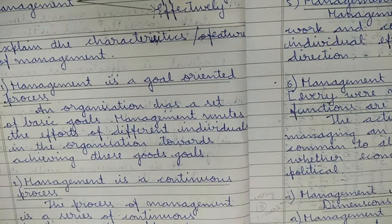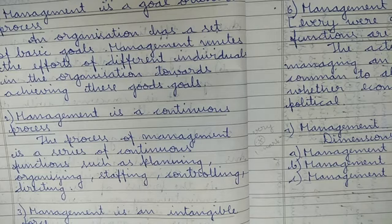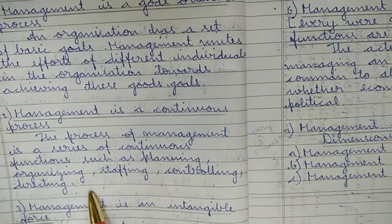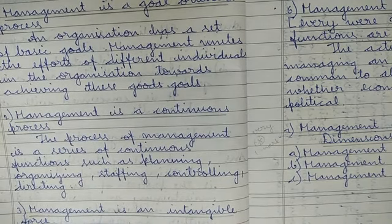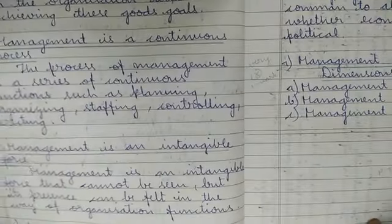For example, as an employee, you aim for a promotion or salary increase, and that personal effort also contributes to the organization's improvement. Management unites all these individual efforts toward achieving the organization's goals. Second point: management is a continuous process — it is a series of continuous functions such as planning, organizing, staffing, directing, and controlling.